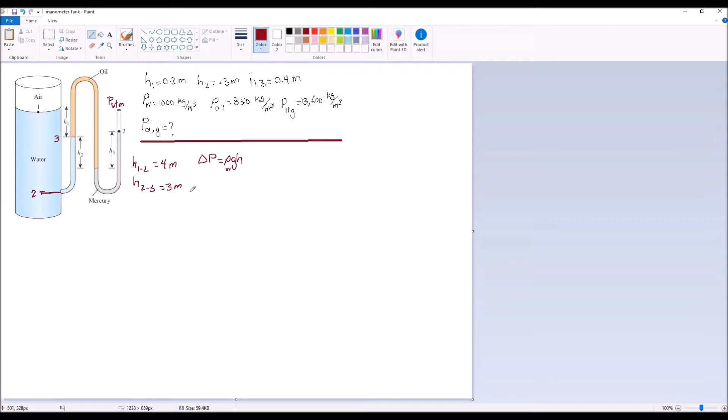So let's do that starting from point 1. So we have P1, which is the gauge pressure of air. For now, it doesn't matter if it's gauge or atmospheric pressure. So to find P2, because we are moving down from point 1 to 2, we have to add terms. So P2 is equal to P1 plus rho water GH, that H is H from 1 to 2.